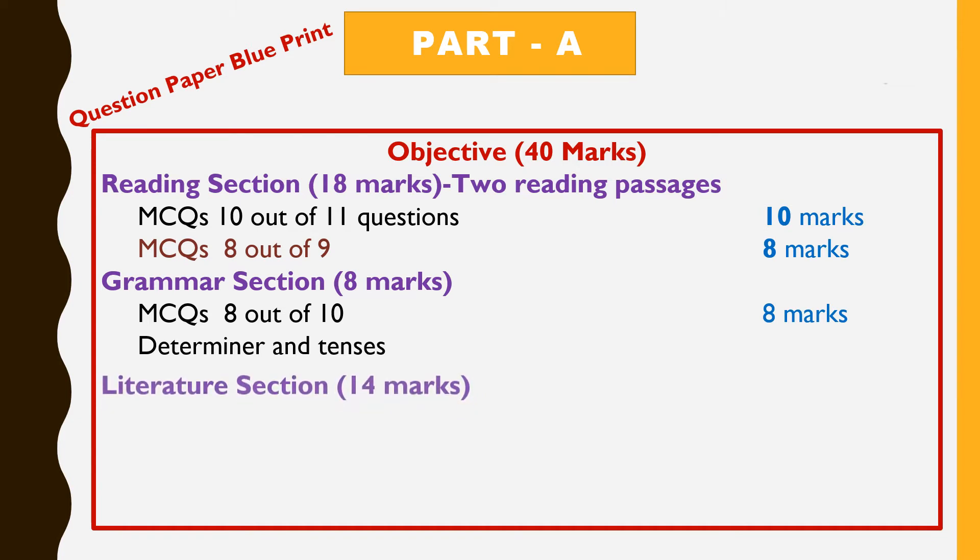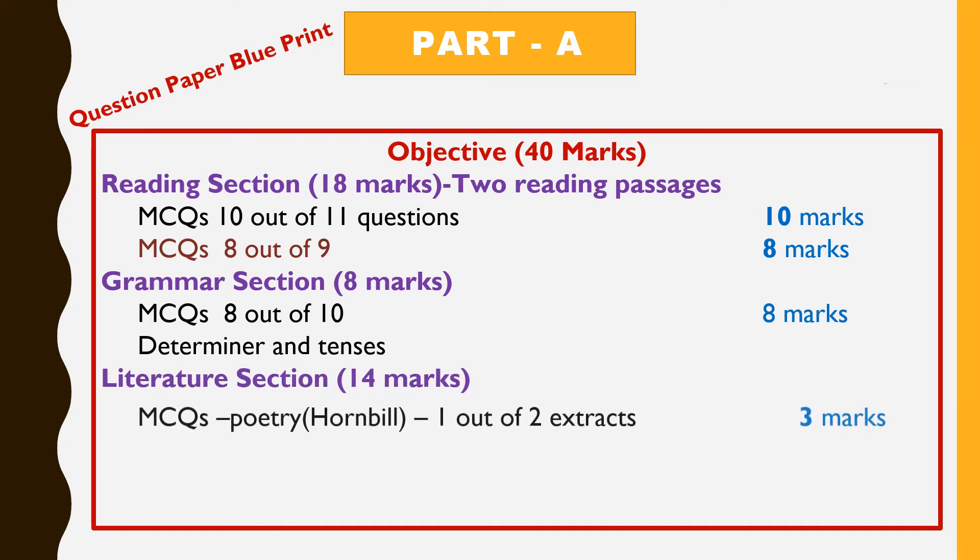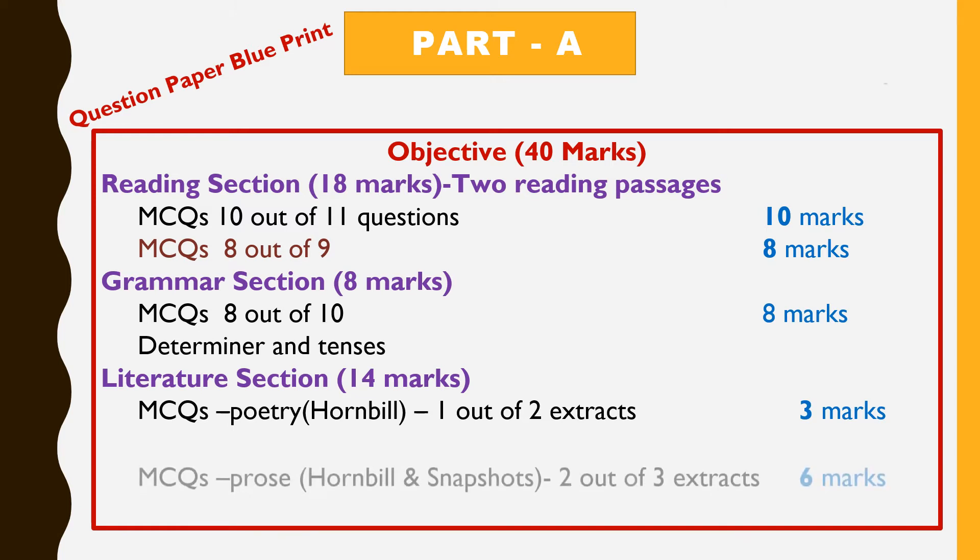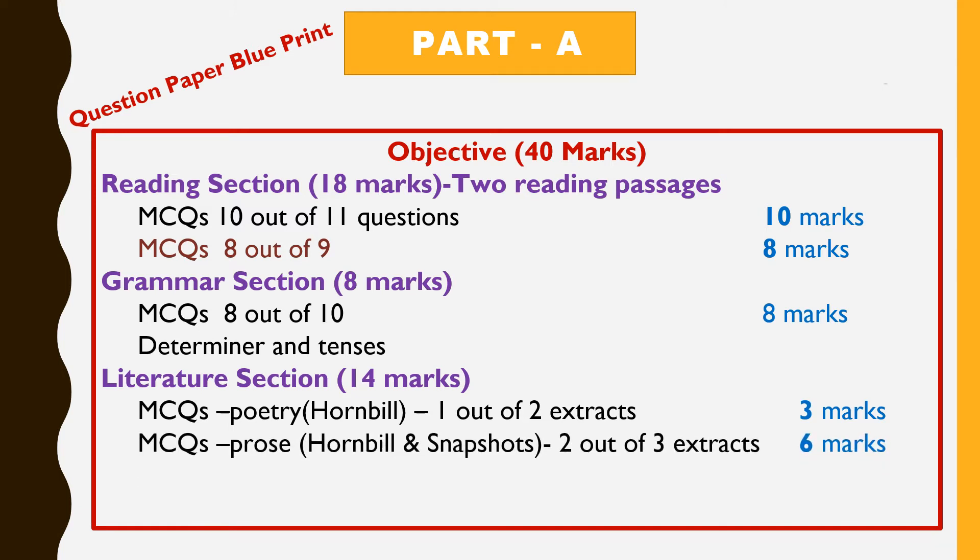It is literature section which carries 14 marks. To assess your comprehension and appreciation, you will get multiple choice questions from an extract from poetry that is from hornbill. You will get 2 extracts and out of that, you have to attempt 1 and it carries 3 marks. Next question will be again multiple choice questions based on 2 prose extracts. Out of 3 prose extracts from both hornbill as well as snapshots, you have to attempt 2 prose extracts which carries 6 marks.